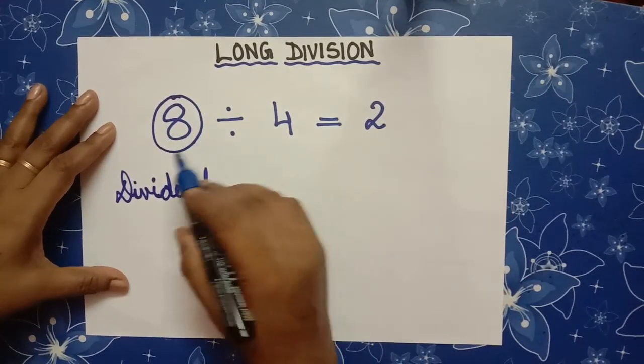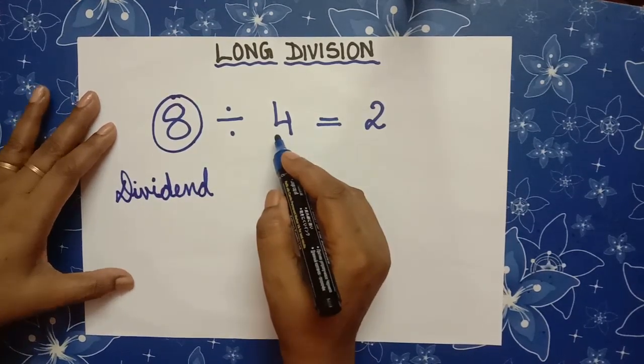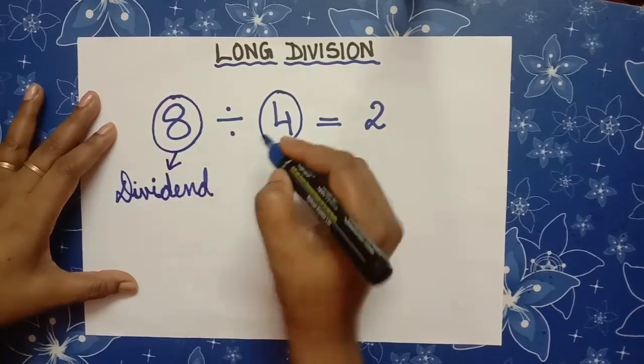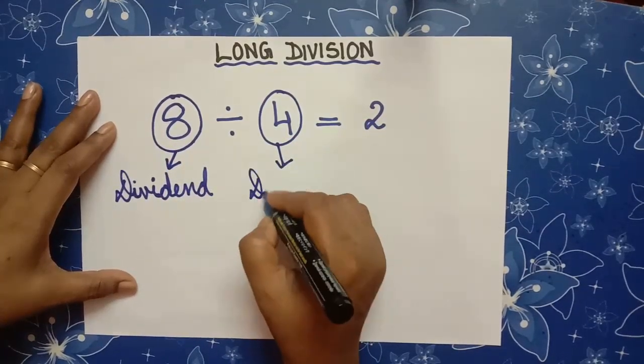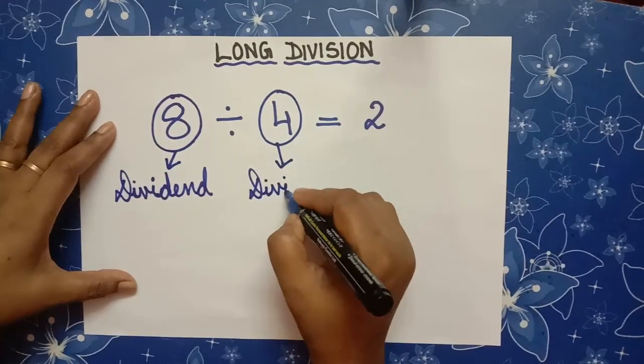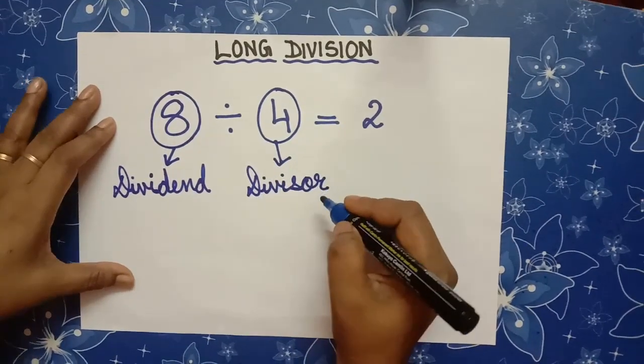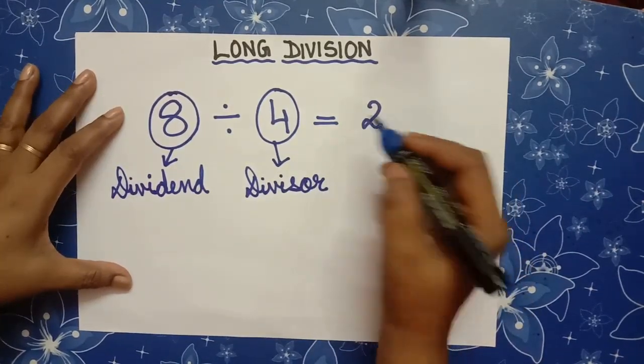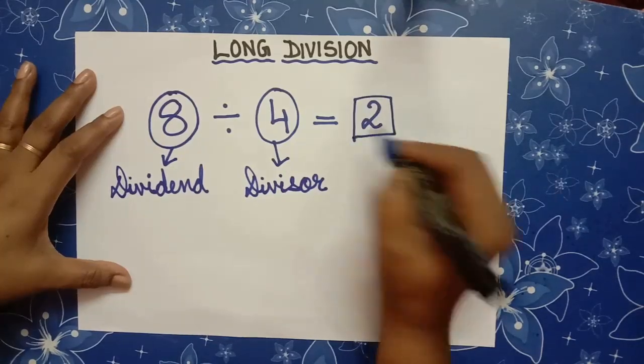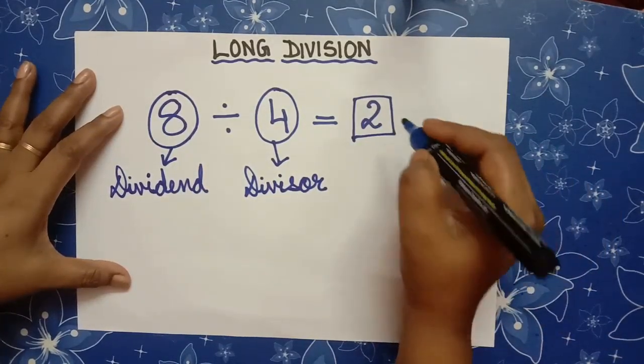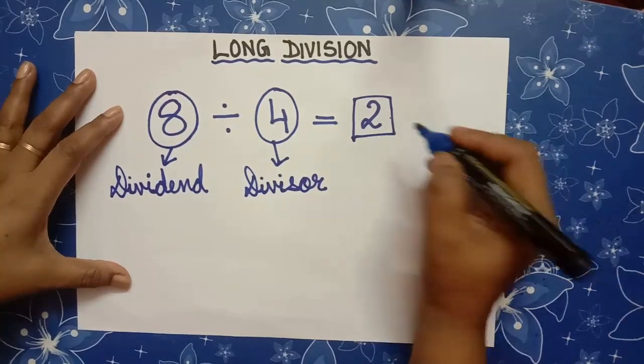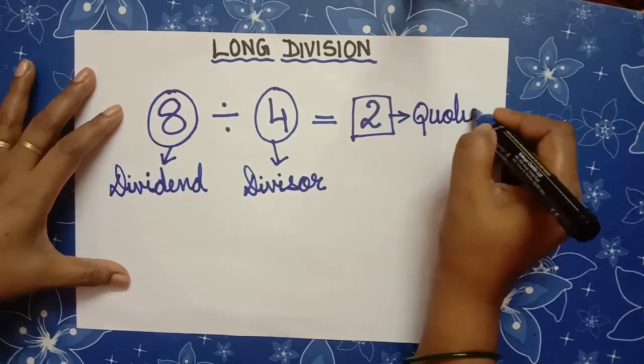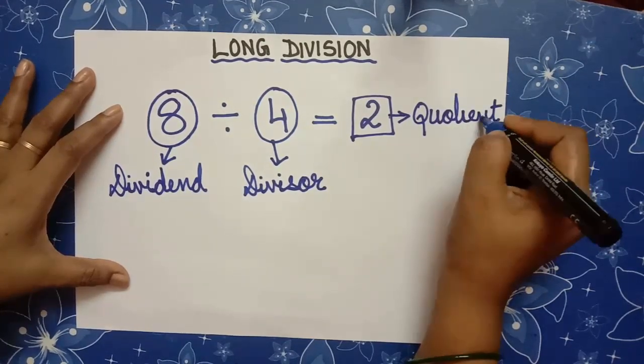The number dividing it, that is 4, is called the divisor. And the result that is answer which we are getting, that is 2, is called the quotient. Q-U-O-T-I-E-N-T, quotient.